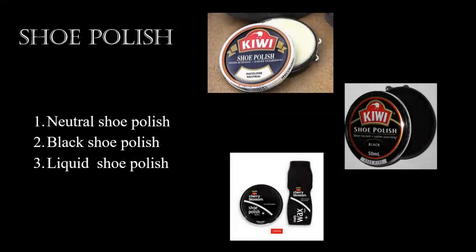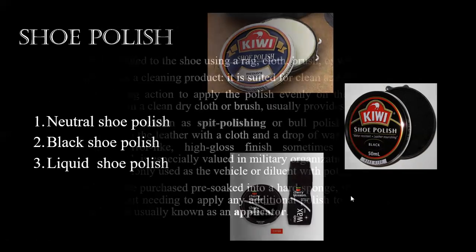Here are some shoe polishes. Kiwi is a brand. This first one is a neutral shoe polish — we can apply it on shoes of any color. This one is a black shoe polish for black shoes, and this one is a liquid shoe polish. It has a sponge on top as an applicator, pre-soaked in the shoe polish, making it very easy to apply.